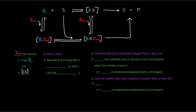Why is that? Because the binding site for the non-competitive inhibitor is elsewhere on the enzyme — it's not the active site. It's not like a competitive inhibitor; it doesn't bind at the active site. So whether or not the substrate is bound is irrelevant to this non-competitive inhibitor.